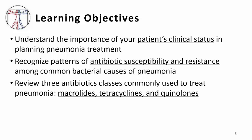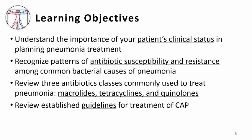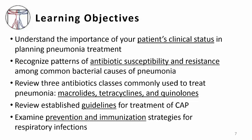Third, to review three classes of antibiotics that are commonly used to treat pneumonia — the macrolides, tetracyclines, and quinolones. After reviewing various clinical guidelines outlining specific antibiotic recommendations in pneumonia, we will discuss vaccinations against common respiratory pathogens as preventive strategies against lung infections.